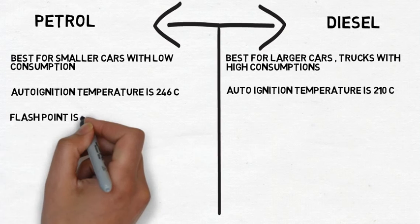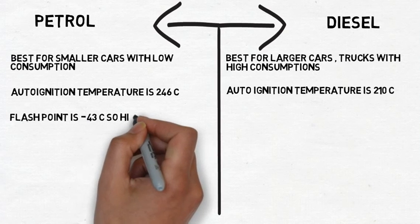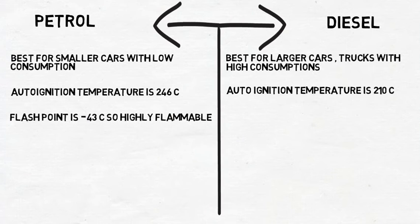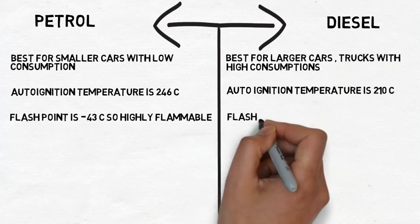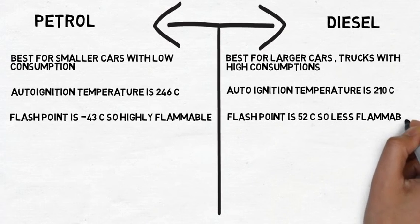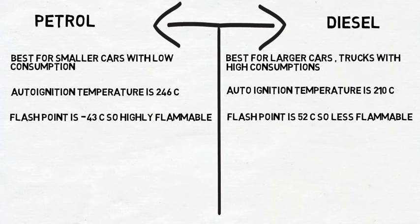The flash point of petrol is minus 43 degrees Celsius, so it is highly flammable and volatile. Diesel's flash point is 52 degrees Celsius, so it is less flammable as compared to petrol.